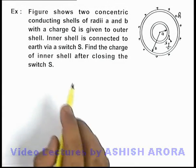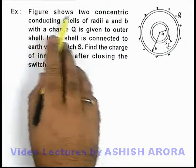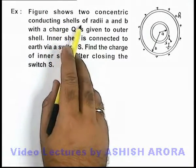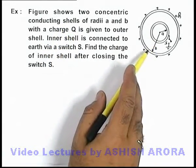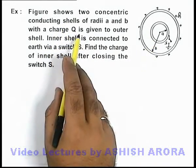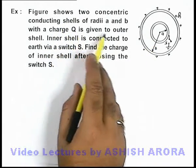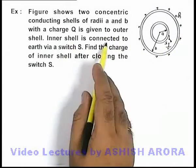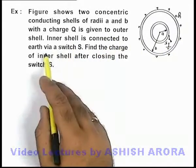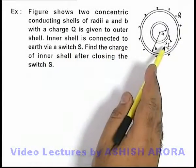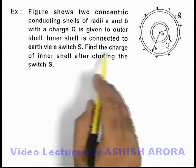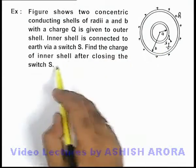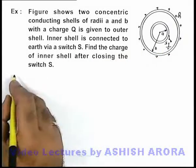In this example, this figure shows two concentric conducting shells of radii a and b. A charge Q is given to the outer shell, and the inner shell is connected to earth via switch S. We are required to find the charge of the inner shell after closing the switch S.